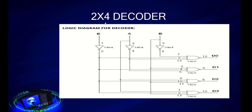For example, if we take 2 into 4 decoder, the logical diagram has been given here. We use 3 NOT gates and 4 NAND gates over here. And this is the enable pin and these 2 are the inputs and these 4 are the outputs.